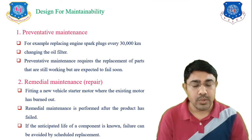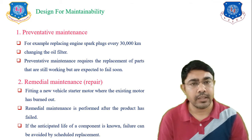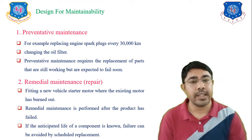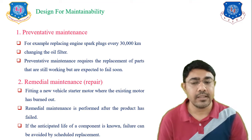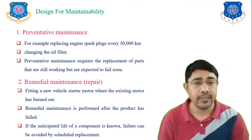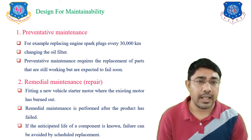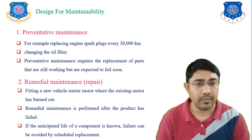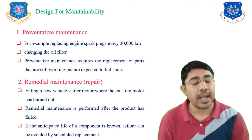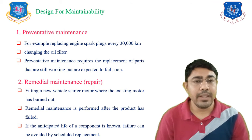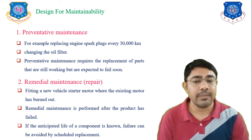The first kind is preventive maintenance. For example, replacing the engine spark plug every 30,000 kilometers, or changing the oil filter — these are examples of preventive maintenance. This is the type of maintenance where the component has not yet failed, but we replace it after a certain life period to avoid failure. Preventive maintenance requires the replacement of parts that are still working but are expected to fail soon — before the failure occurs, we replace them.